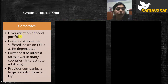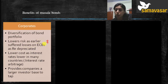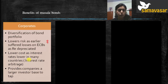For corporates investing, Masala Bonds offer diversification of bond portfolio since it is a new instrument. They also offer lower risk — earlier, losses on offshore bonds arose when the rupee depreciated, but since these are rupee denominated, the exchange rate risk is borne by the investor, not the issuer. Additionally, interest rates in advanced countries like the US or Eurozone are much lower than in India, so corporates can borrow at a lower cost. Finally, companies gain access to a larger investor base by tapping the entire world.